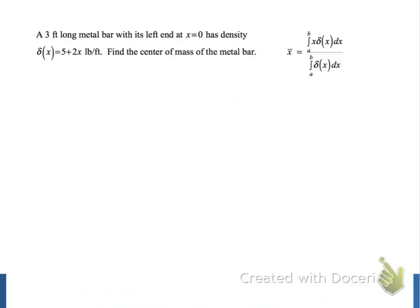A 3-foot-long metal bar that has its left end at x equals 0 has the density given by delta x equals 5 plus 2x pounds per foot. We want to find the center of mass of this bar, or the place where it would balance. And to the right, we have the formula for x-bar, the center of mass.